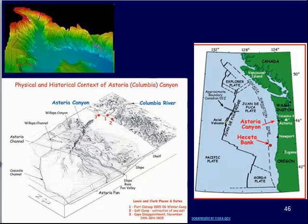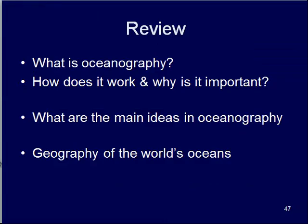In lab this week, we're going to take a look at some of these different ocean features, label them on maps, and explore a little bit of the topography of our oceans. To review and wrap up: we went over what oceanography is, how it works, why it's important, what some of the main ideas are in oceanography, and we looked at the geography of the world's oceans — some of the main features that we see, and what's happening in the Pacific Northwest.